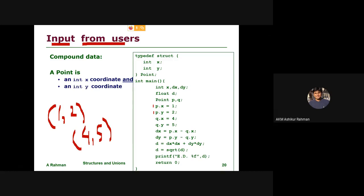I will show you how to capture the user input. If p.x is equal to 1, it is written. This is the scanf. I can have Q.x get scanned for it and Q.y can be scanned for it. It is more generic.